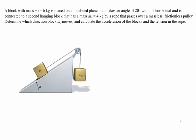At first this might look obvious — if M1 is 6 kg and M2 is 4 kg, you might think M1 goes down the ramp and M2 goes up. But because M1 is on an incline, we don't look at its full weight. Some of its weight is supported by the incline; the normal force cancels out part of it. It's the parallel component of the weight of M1 that matters. So the first thing to do is to find the forces.